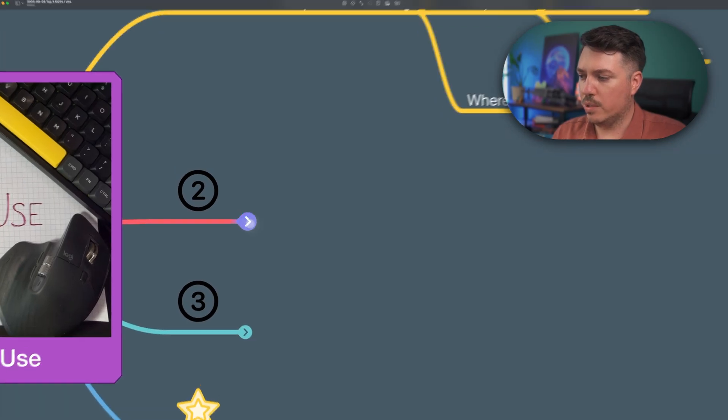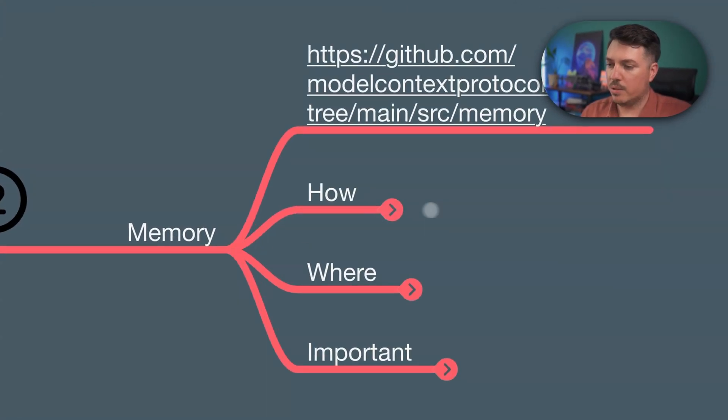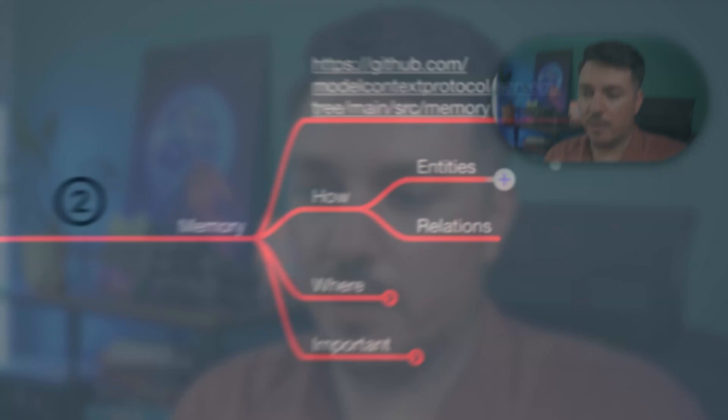Let's go to the second one. The second one is memory. This memory MCP is really great, especially because it runs completely locally, because it uses a JSON file — a memory JSON file.